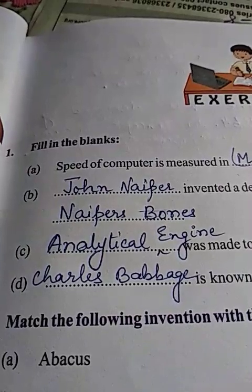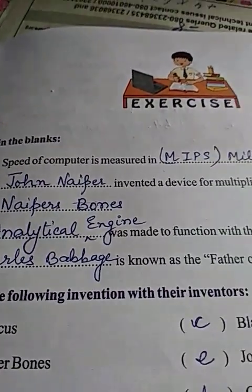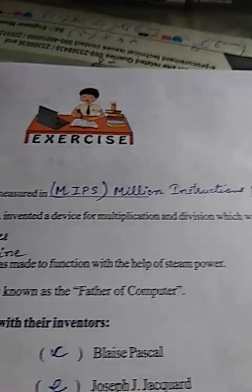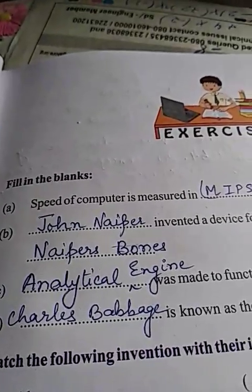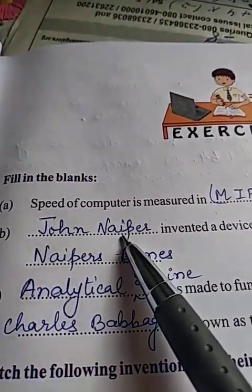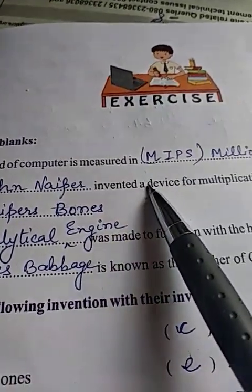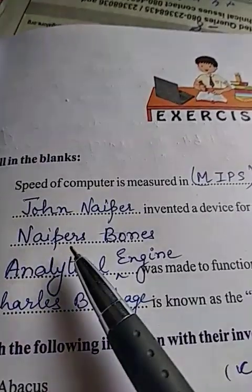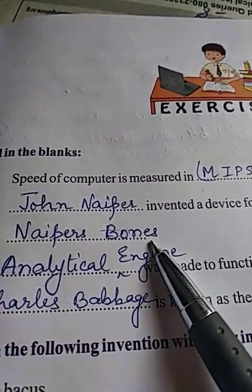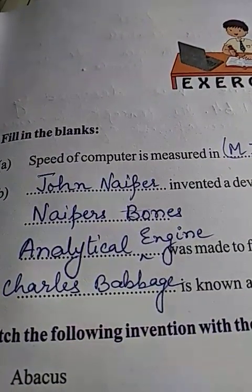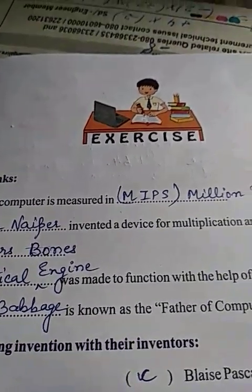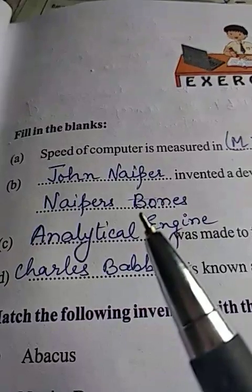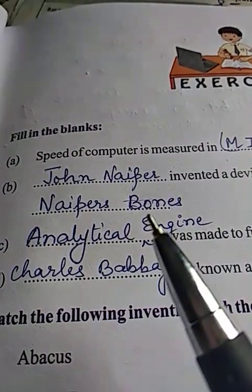The second question says: dash invented a device for multiplication and division, which was called Napier's Bones. The answer is John Napier. John Napier invented a device for multiplication and division, which was called Napier's Bones.